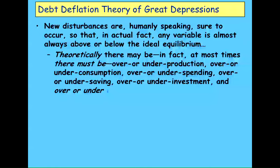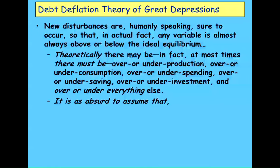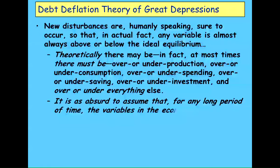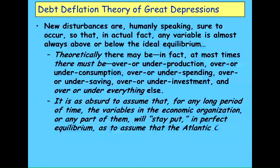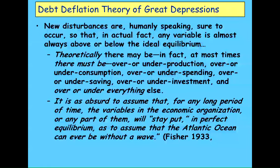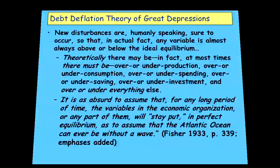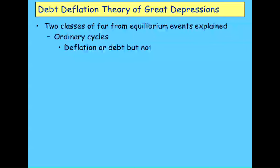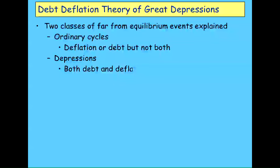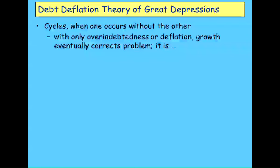Fisher said it's as absurd to assume that variables in the economy are going to be in equilibrium as it is to assume that the Atlantic Ocean can never be without a wave — one of the best statements for why disequilibrium analysis is vital to understand economics, and why neoclassicals don't understand capitalism. He explained two classes of events using this theorem: ordinary cycles, where there's excessive debt or deflation but not both; and depressions, where you have both at the same time. With only one, growth will eventually correct the problem — it's more like a stable equilibrium, you rock the boat, it returns to centre.